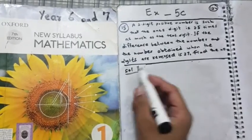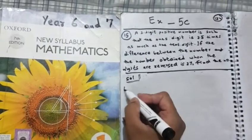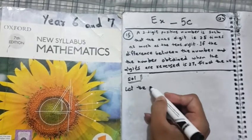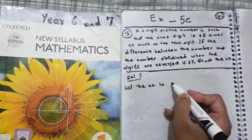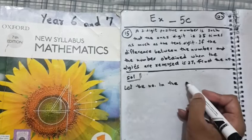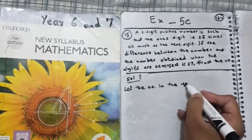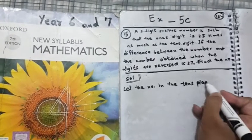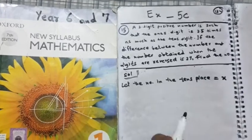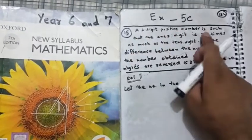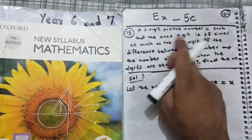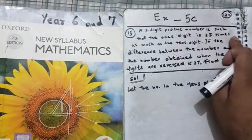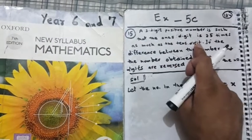First of all, we shall write, let the number in the 10's place is equal to x. Because they say a 2-digit positive number is such that the 1's digit is 2.5 times as much as the 10's digit.